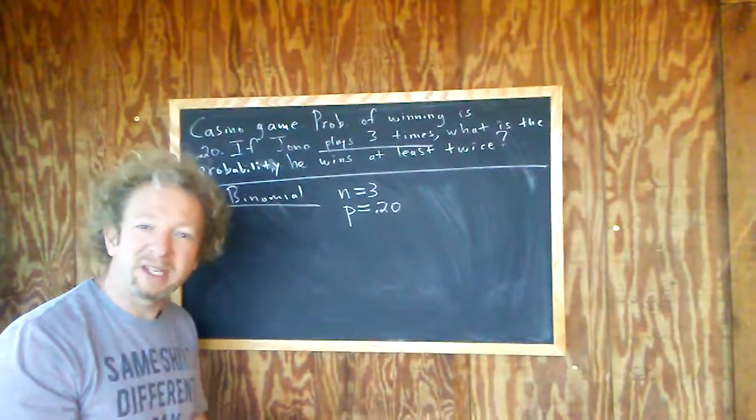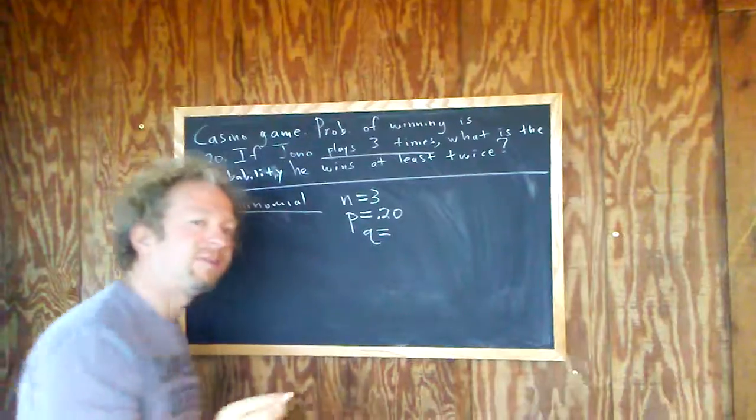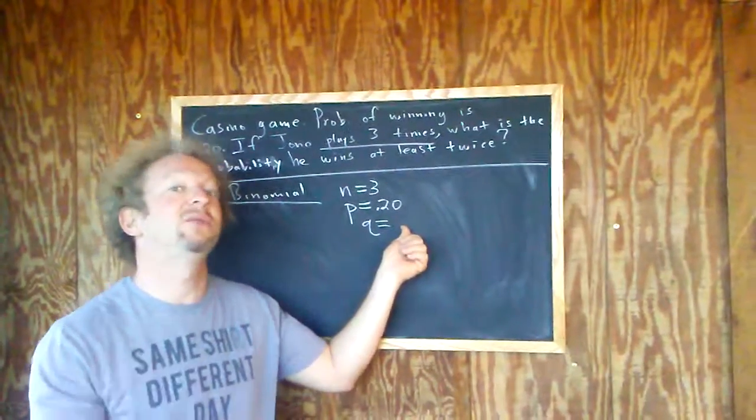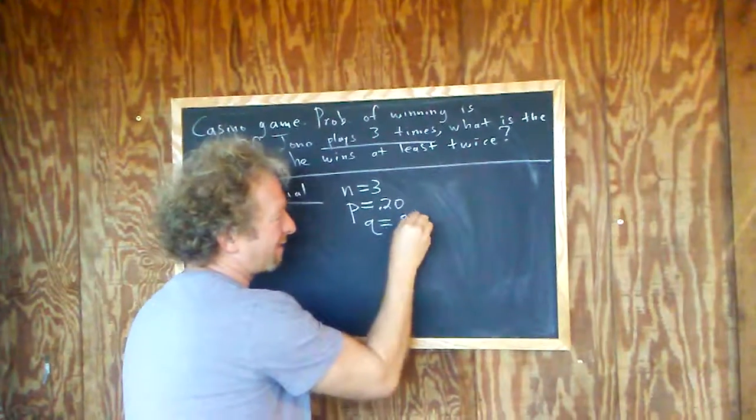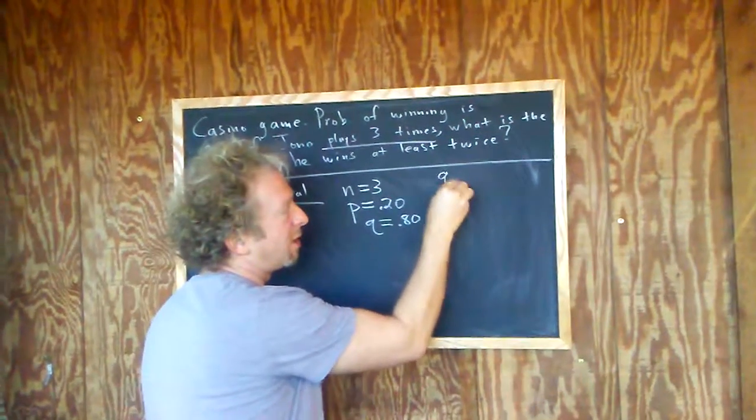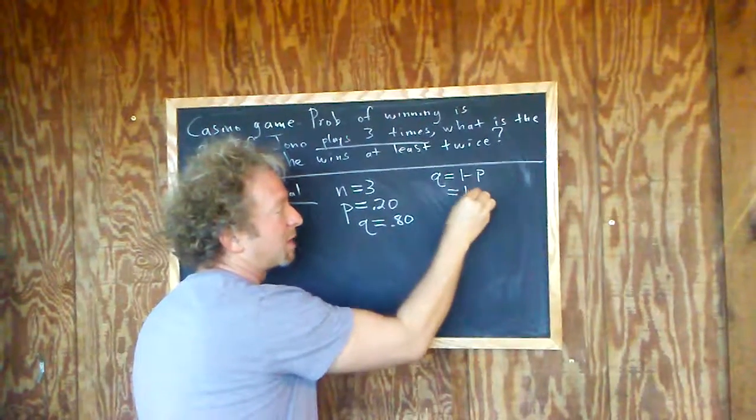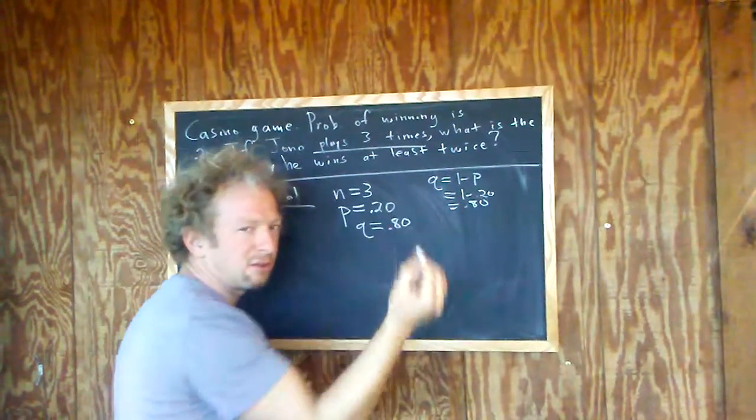Q is the probability of failure. So Q, well, a couple ways to do it. If there's a 20% chance he wins, then there's an 80% chance he loses, right? So just common sense. So 0.80. If you don't like that, if the numbers are kind of funky, what you can do is you can just do 1 minus P. So you can do 1 minus 0.20, so you can get 0.80, just in case the numbers aren't as nice, right?